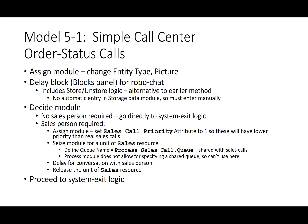Order status calls use an assign module to change entity type and picture. Delay blocks in the block panel handle the recording, including store and unstore logic as an alternate method. The decide module routes those not requiring a salesperson directly to system exit logic. If a salesperson is required, the assign module sets the sales call priority attribute to 1 so it is deprioritized over sales calls. The seize module for a unit of sales resource uses the shared queue name 'process sales call.queue.' The process module does not allow specifying a shared queue, so we use the seize module instead.